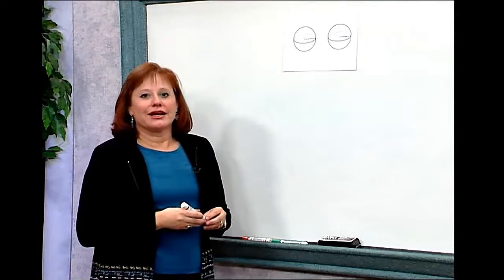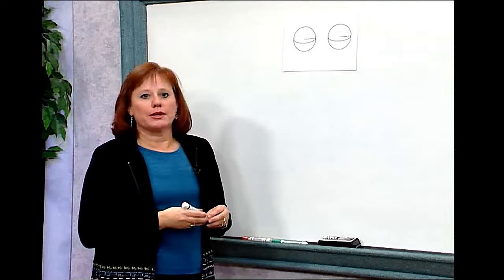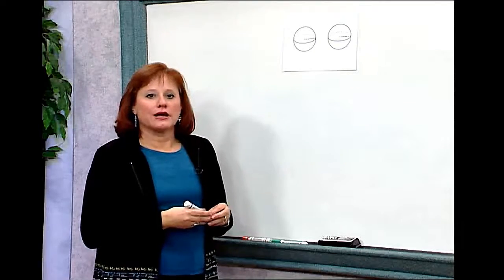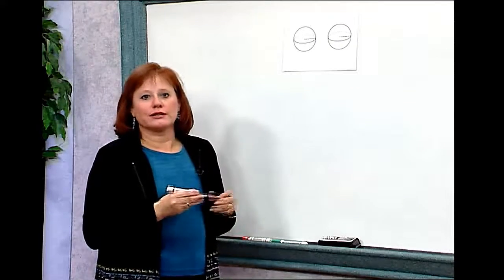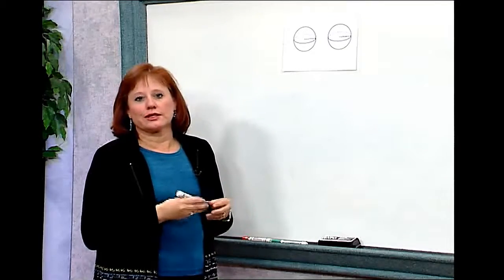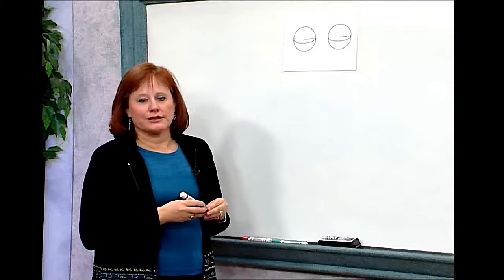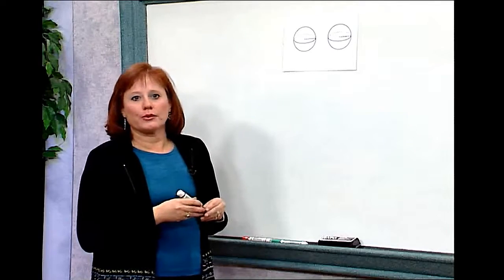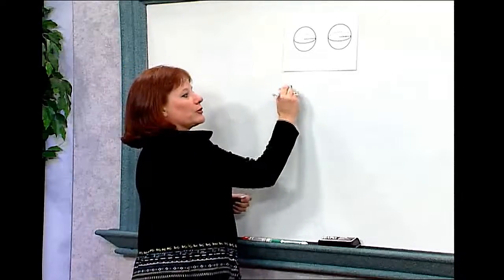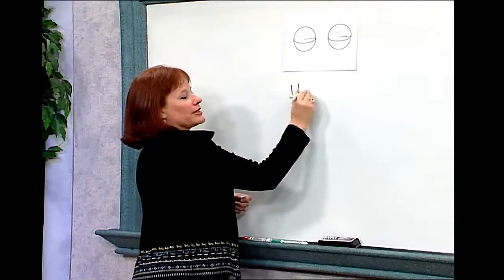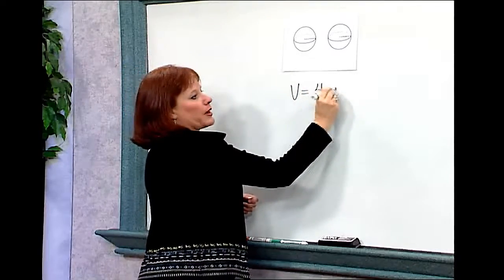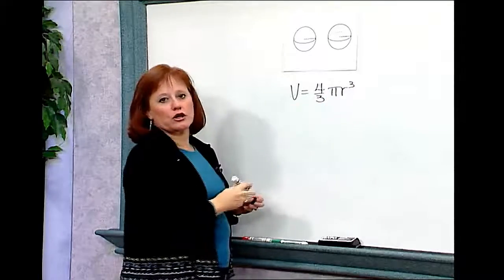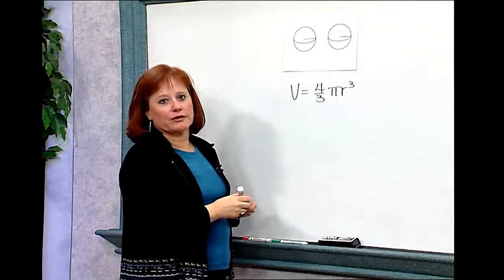Spheres. A sphere is a special kind of three-dimensional shape that operates under its own rules. It does not compare to prisms, pyramids, cones, or cylinders — it has its own formulas. You'll need to memorize the formula in order to use it properly. The formula for the volume of a sphere is: volume equals four-thirds pi radius cubed.